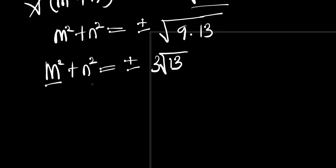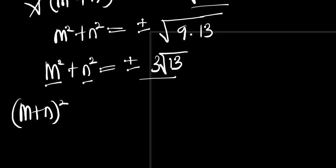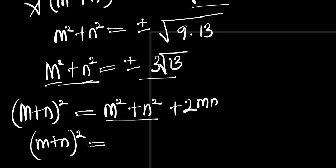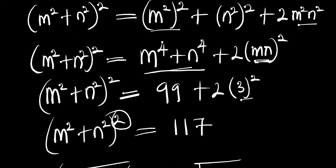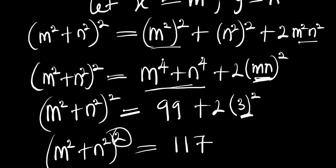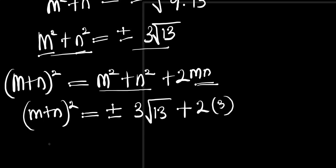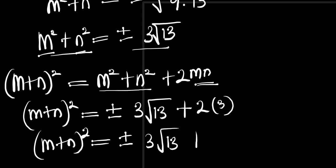Now we have m² + n² equal to that value. Recall the identity: (m + n)² equals m squared plus n squared plus 2mn. We insert the value of m² + n², giving (m + n)² equals plus or minus 3 root 13 plus 2 times mn. Since mn equals 3, we have plus 2 times 3.